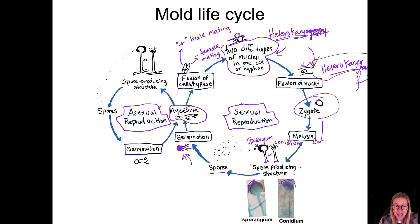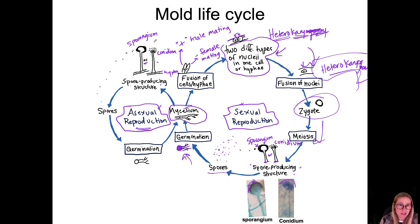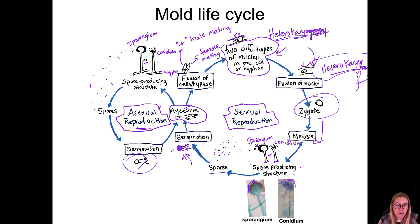The asexual reproduction part is a lot simpler. The asexual part of the mycelium will just sprout either a sporangium or a conidiophore — depending on the species — as the spore-producing structure. It branches off a single hypha, shoots up and grows, and the spores develop. When it's ready, the spores burst out, go through the air, land somewhere, and when conditions are perfect — enough moisture, nutrients, etc. — they germinate, grow hyphae, elongate, and become mycelium.